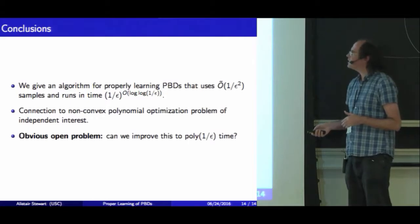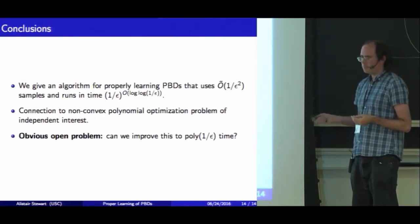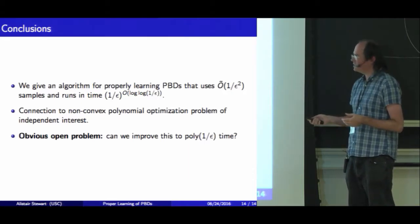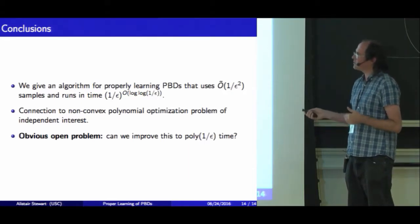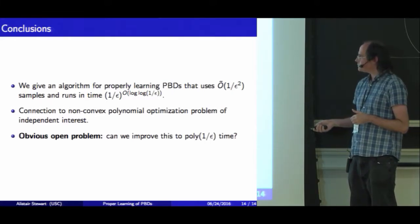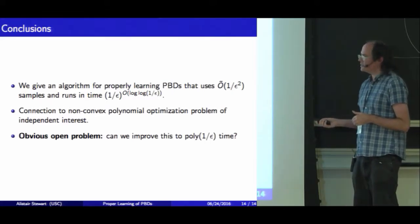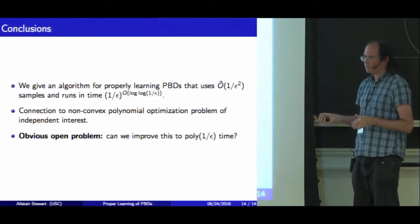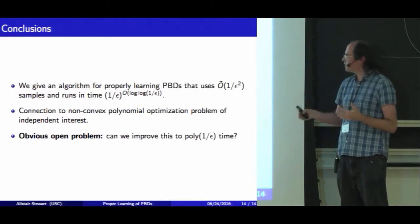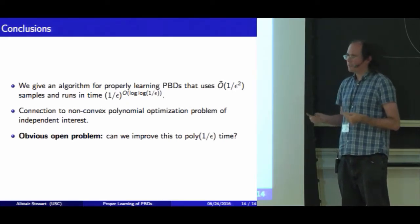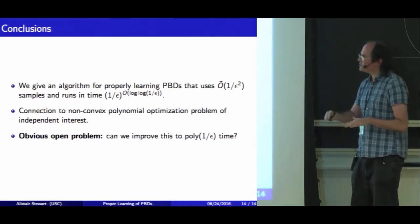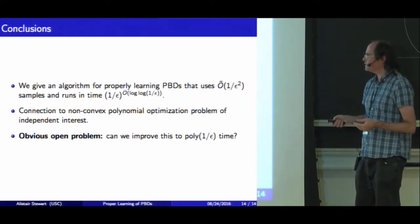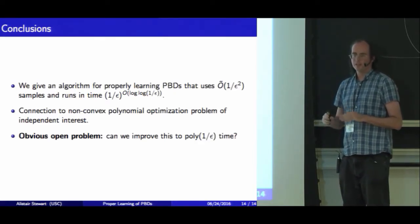In conclusion, we give an algorithm for properly learning Poisson binomial distributions which runs in the time 1/ε^(log log 1/ε), beating our previous bound of 1/ε^(log 1/ε). The big open question is whether we can improve this to polynomial time. We have this connection to a non-convex polynomial optimization problem, and there have been plenty of applications of real-rooted polynomials in computer science recently, so this connection may be of interest.